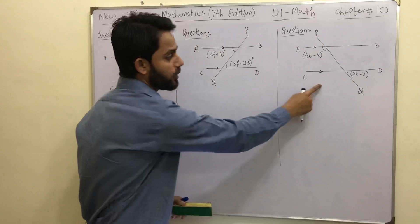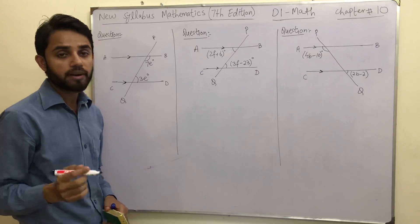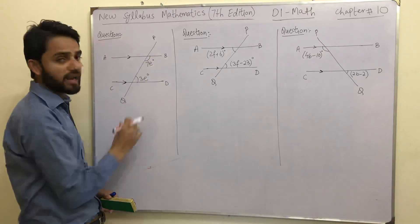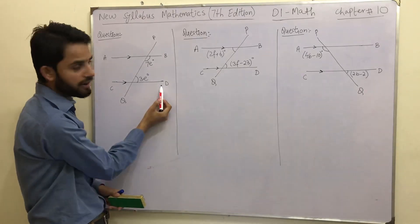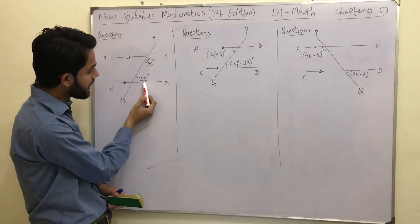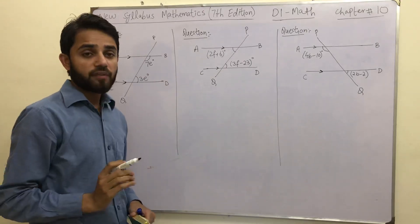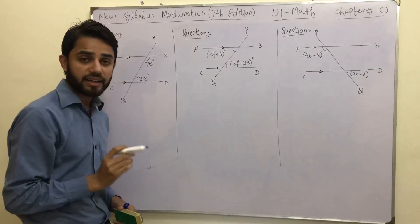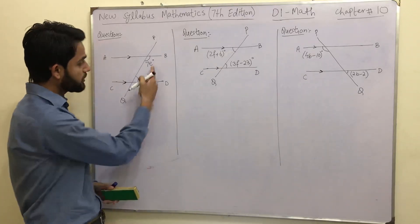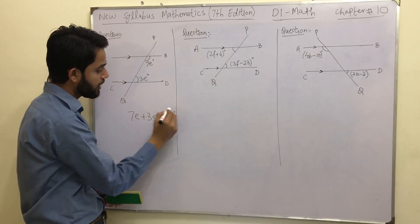In the next question we have variable F, and in the one after that we have B. Now, these two angles — 7E and 3E — are lying inside the parallel lines. When two angles are lying inside the parallel lines, their sum is always going to be 180 degrees. That is the key condition and a well-known formula. So 7E plus 3E equals 180 degrees.